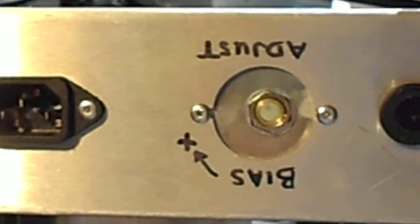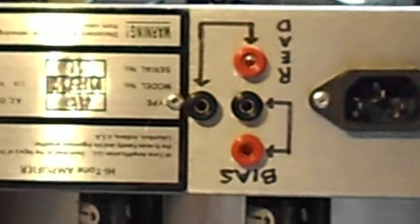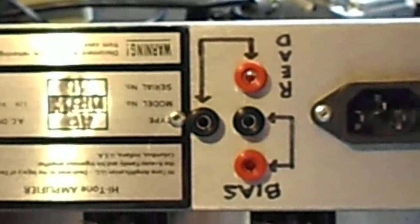Similarly, I installed the bias adjust pot on the back of the chassis so I can make my adjustments without taking the chassis out of the box.